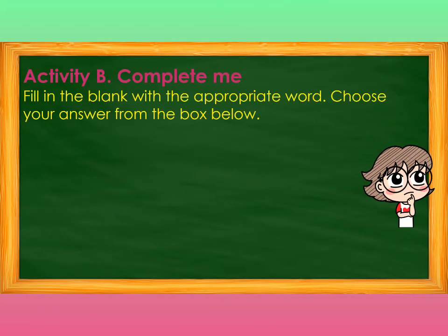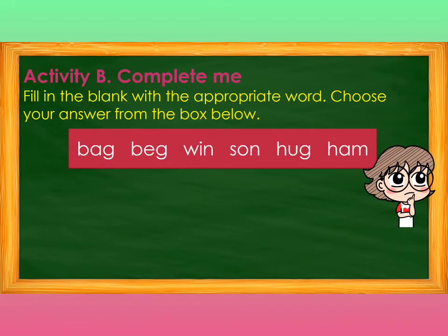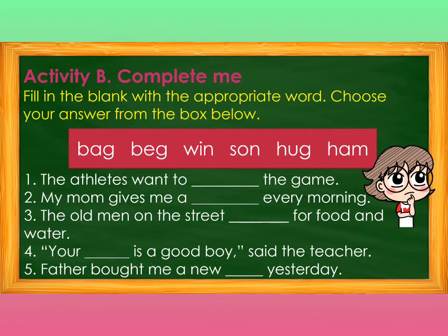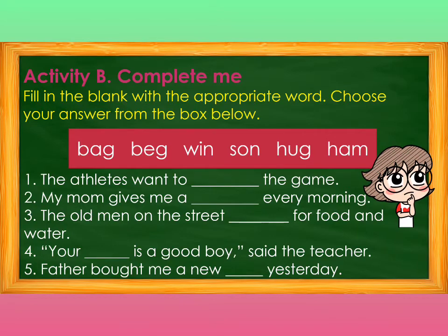Let us proceed to Activity B: Fill in the blank with the appropriate word. Choose your answer from the box below. The words in the box are: bug, deck, wind, ton, hug, hump. Number 1: The athletes want to blank the game. Number 2: My mom gives me a blank every morning. Number 3: The old man on the street blanks for food and water. Number 4: Your blank is a good boy, said the teacher. Number 5: Father bought me a new blank yesterday.